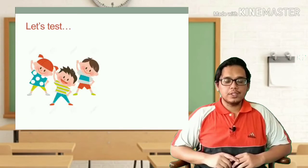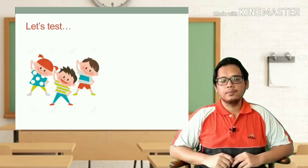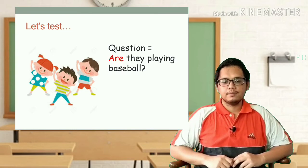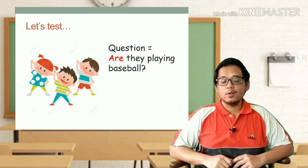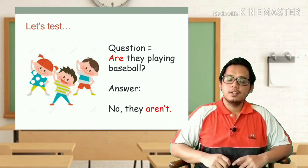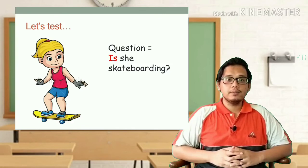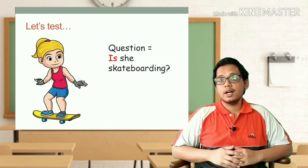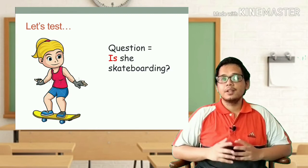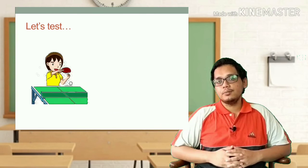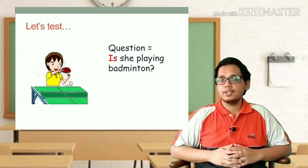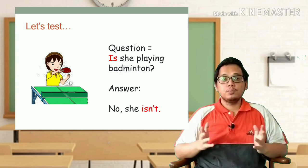Do you get that? Okay children, let's test what you have learned. Look at the picture. Are they playing baseball? Can you give me the answer? Yes, well done — No, they aren't. Next question: Is she skateboarding? What do you think is the answer? Yes, very good — Yes, she is. And the last question: Is she playing badminton? What do you think is the answer? Yes, well done — No, she isn't.